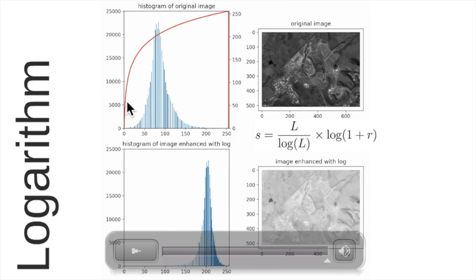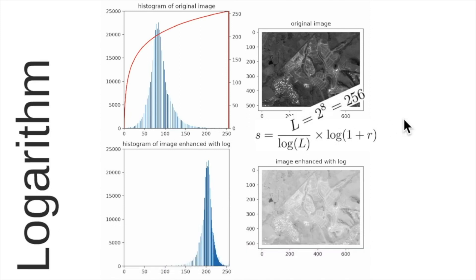This is why we spread more this start point and we shrink the histogram in the right side as we can see in this histogram. These L values here in our case is equal to 256 which is 2 to the power of 8 because these are 8-bit images.